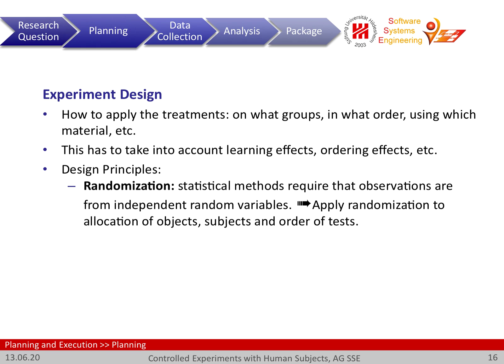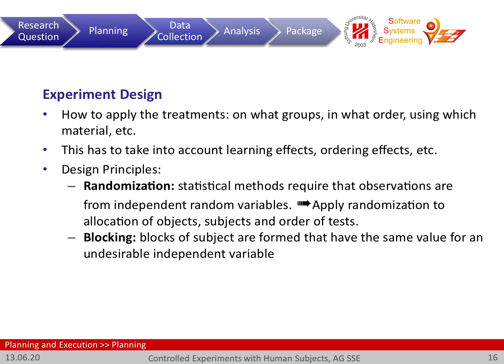That's a standard procedure. However, one should take into account that randomization by itself is not a guarantee that the people assigned to the different treatments will have the same distribution. We can try to enforce that by doing so-called blocking. Let's say we are interested in different groups of experience, and we want to have the same distribution of experience for the different treatments.